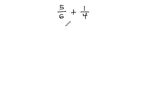When adding fractions with different denominators, we know we must first identify the least common denominator, which in this case, 6 and 4, both go into 12.